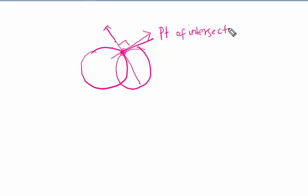Point of intersection. At the point of intersection, if the tangents are at right angles, then I will call it as the circles cut orthogonally.